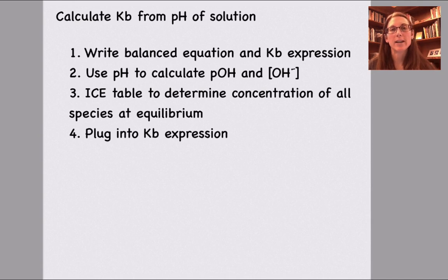Just as we did for acids, if I know the pH of a solution, I can calculate the Kb or pKb for a base. Process is very similar. We're going to write our balanced equation and a Kb expression for the base we're interested in. We'll use the pH then to calculate the pOH, and from there, the hydroxide ion concentration. That'll go into the ICE table, allow us to determine the concentration of all chemical species at equilibrium, which can then be plugged into the Kb expression.